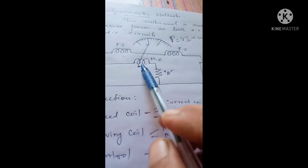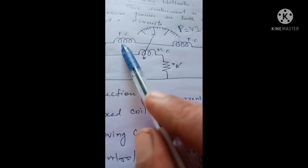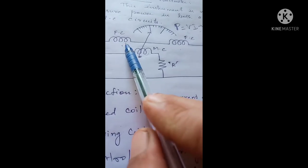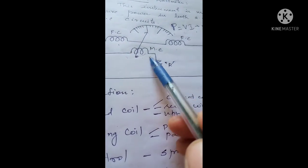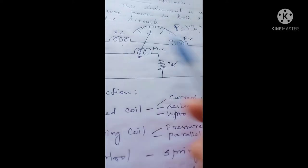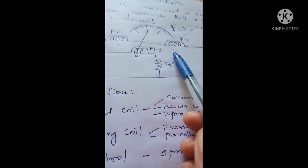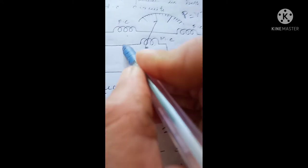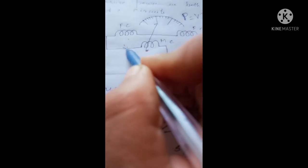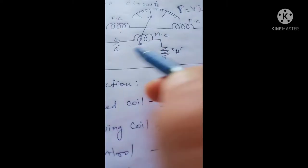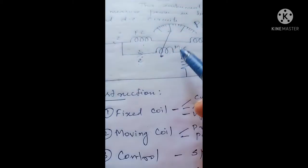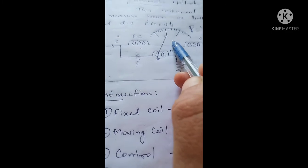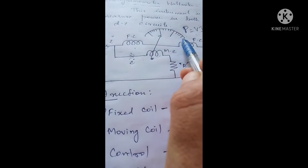Current flows through both the fixed coil and the moving coil. Due to current flow through the fixed coil, a magnetic field is developed. This current multiplied by the input voltage is measured by means of the pointer indication on the scale arrangement.